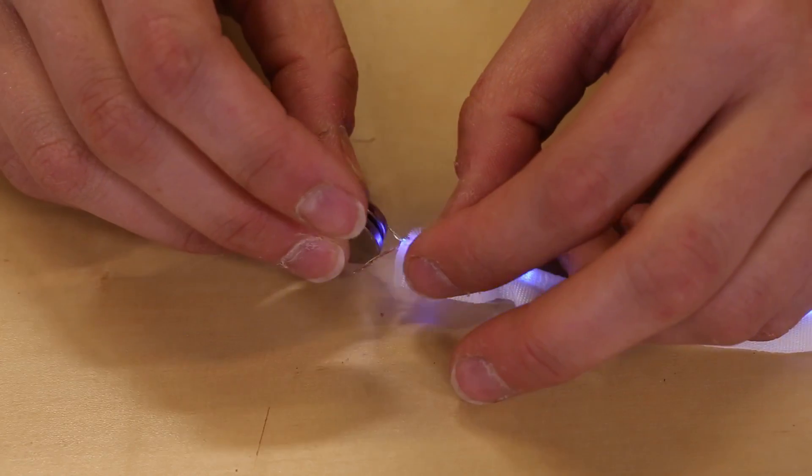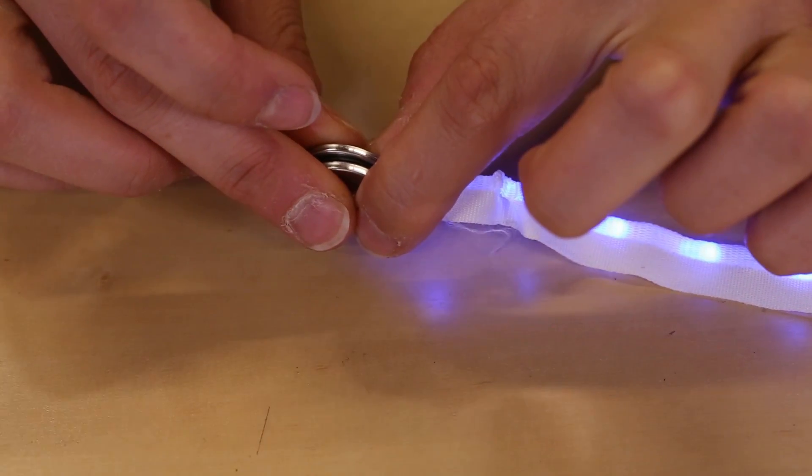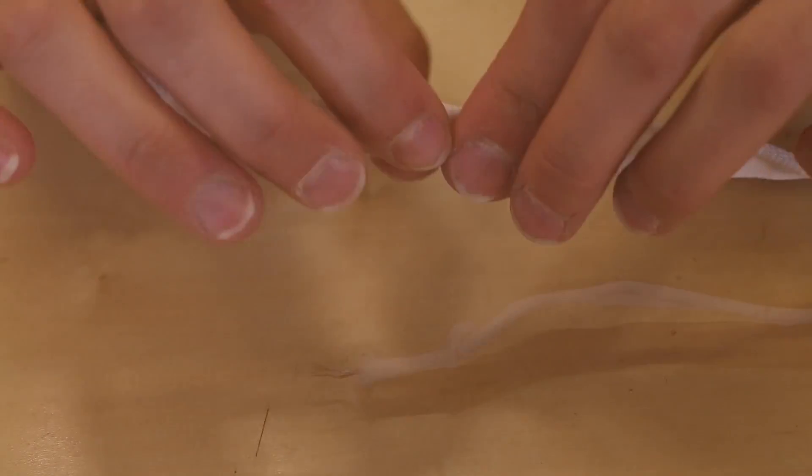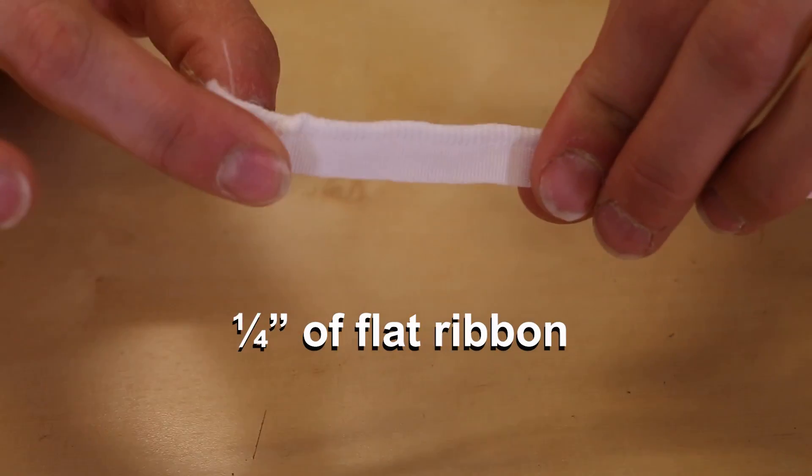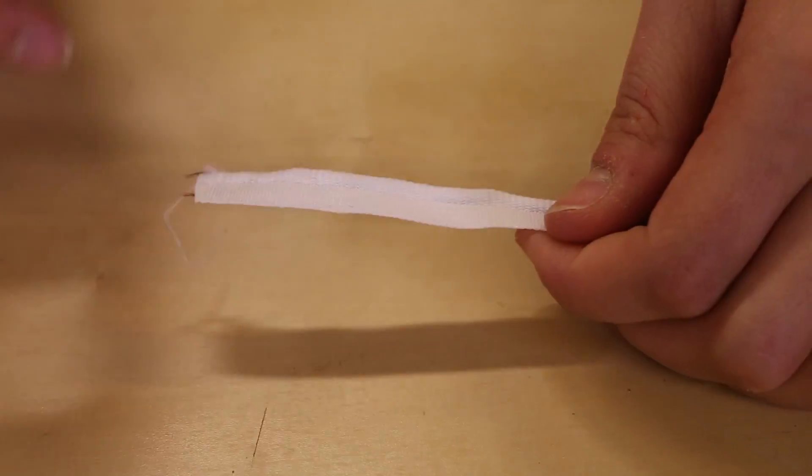I used two coin cell batteries in series to power my strips. Just one would work as well, but with two they are brighter. On the other side is a quarter of an inch of flat ribbon, which we can use to sew down onto clothing, accessories, and more.